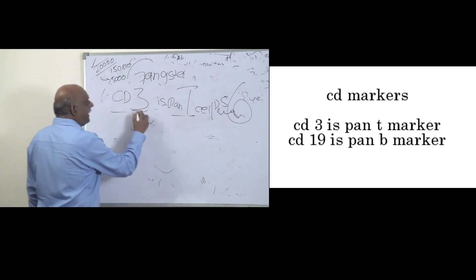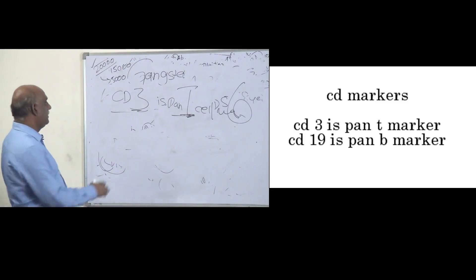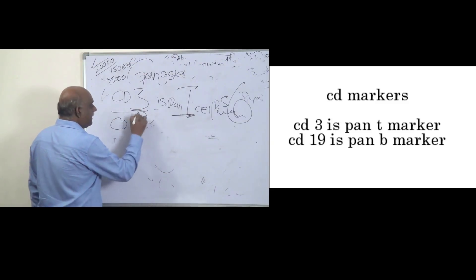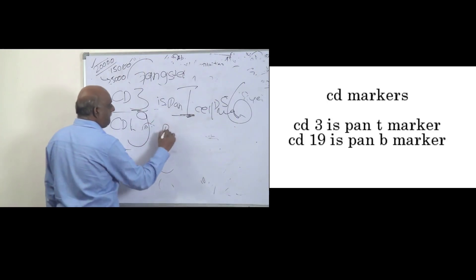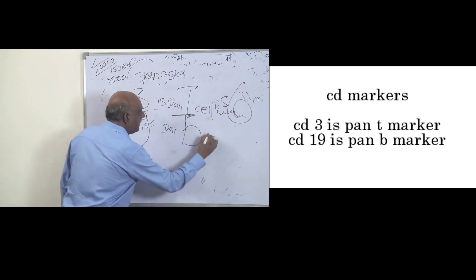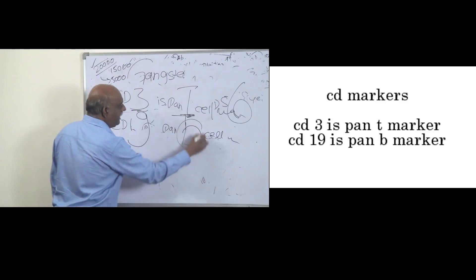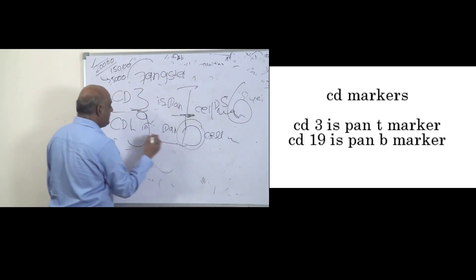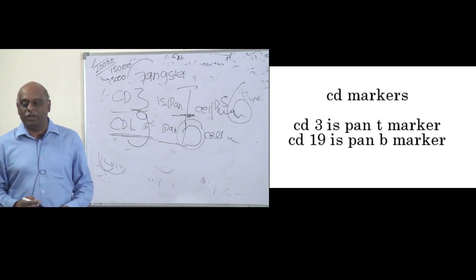So CD3 is pan T cell marker. Then CD19 is the pan B cell marker. 19 ko aise palta to, B ho gaya na? So pan B cell marker is CD19 is what you are not going to forget.